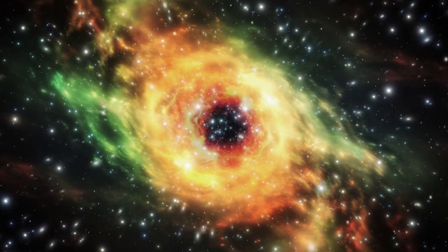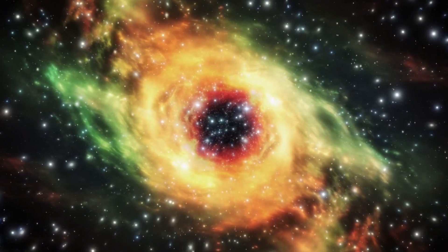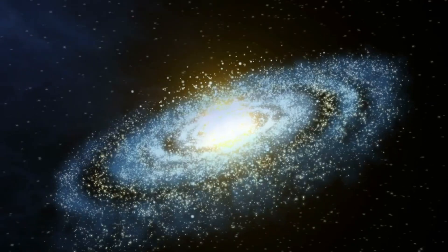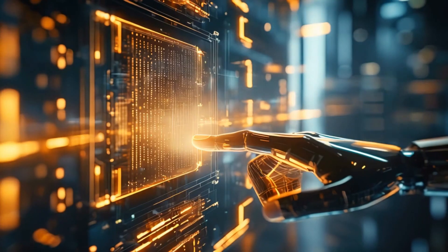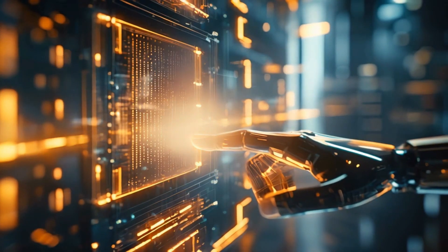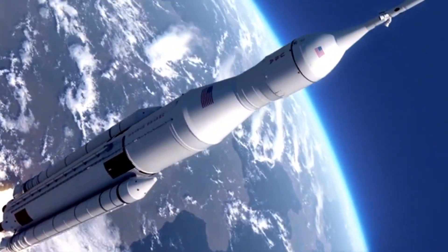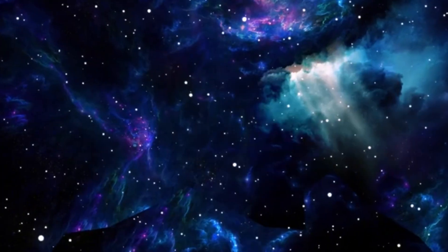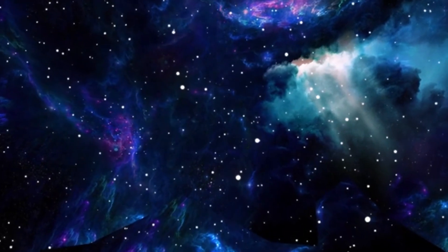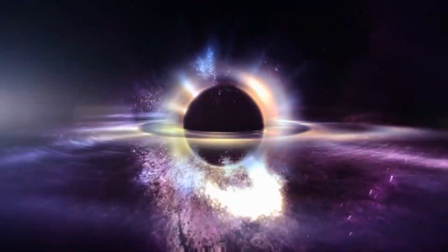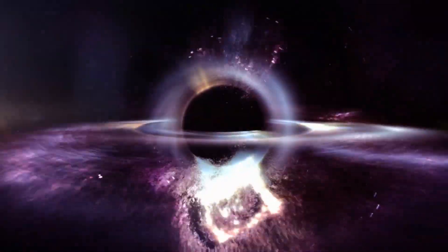Initially hypothesized from the orbits of stars near the galactic center, Sagittarius A's existence was confirmed through advanced technology. Launched in 1990, the Hubble Space Telescope tracked these stars, revealing a dense, immensely massive object, exerting powerful gravitational forces, a hallmark of supermassive black holes.